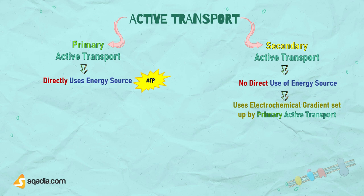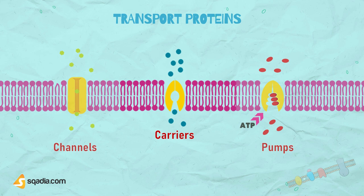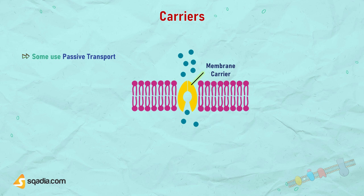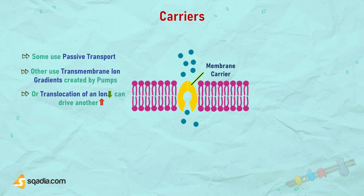Moving on to carriers. Carriers are special types of proteins that help transport solutes, such as ions and small molecules, across cell membranes. Some carriers transport substrates in a passive manner down concentration gradients — solutes move from a region of higher concentration to one of lower concentration. Other carriers use transmembrane ion gradients created by pumps to transport across a membrane up a concentration gradient, or the translocation of an ion down its concentration gradient can drive another ion or solute up a concentration gradient. So these are called secondary transporters.